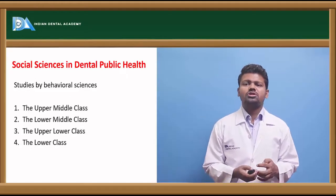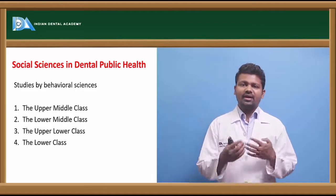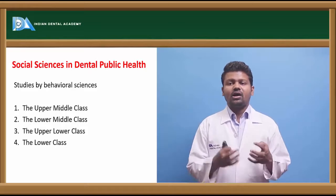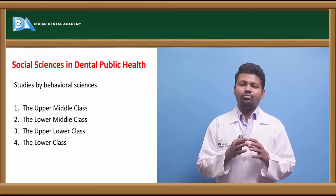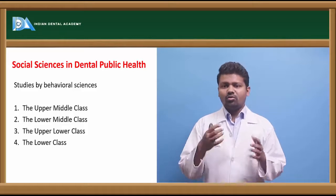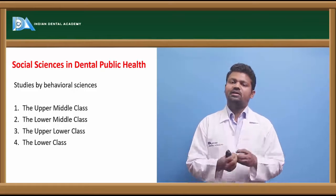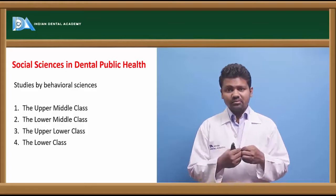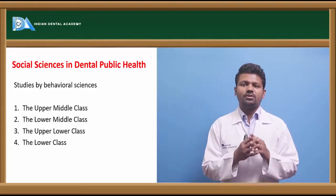Coming to social sciences in public health, studies of behavioral sciences have categorized people into four classes: upper middle class, lower middle class, upper lower class, and lower class. Upper middle class people are professionals with maximum education; they believe in preventive procedures, listen carefully to the dentist, follow instructions, have regular dental checkups, and are concerned about their total general and dental health.